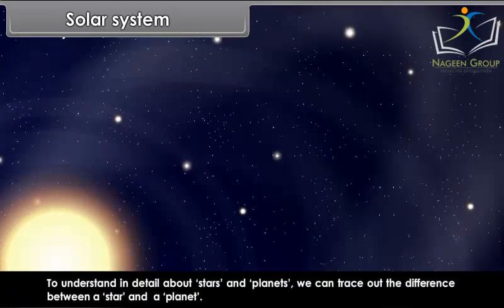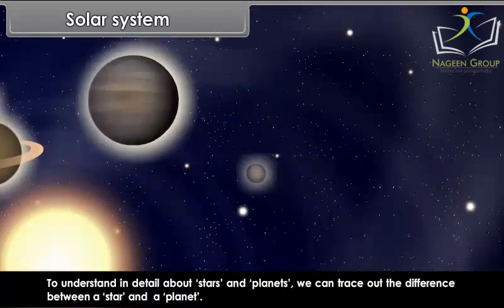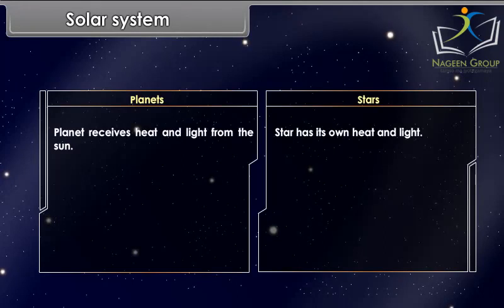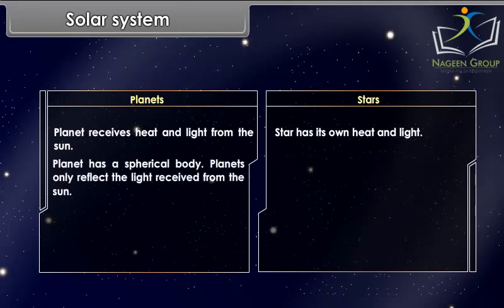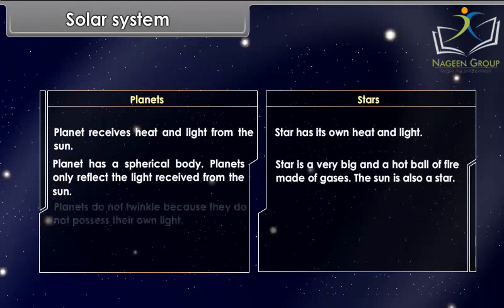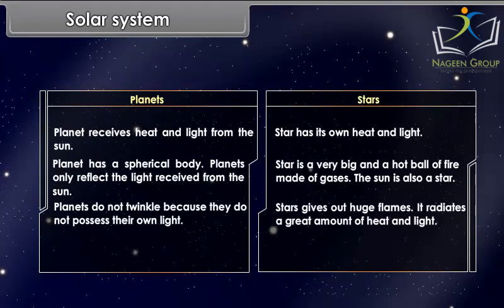To understand in detail about stars and planets, we can trace out the difference between a star and a planet. A planet receives heat and light from the sun, while a star has its own heat and light. A planet has a spherical body and only reflects the light received from the sun. Planets do not twinkle because they do not possess their own light.